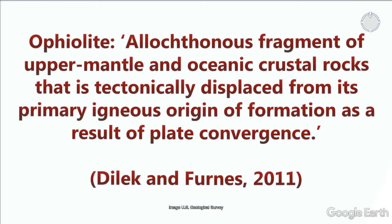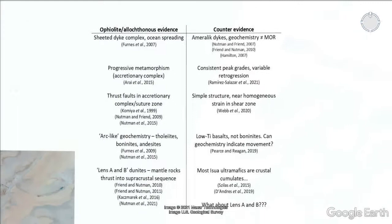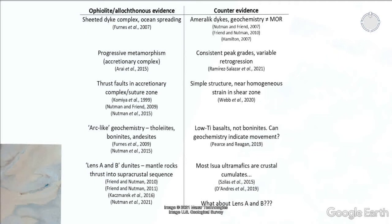I wanted to focus on evidence that the Ischewod supercrustal belt might be allochthonous. There have been arguments that Ischewod contains a sheeted dike complex, which would indicate oceanic spreading — potentially in a back-arc basin or at a mid-ocean ridge. But other authors have argued that this sheeted dike complex is actually misidentified amphibolite dikes, and that the geochemistry is not compatible with a mid-ocean ridge setting.